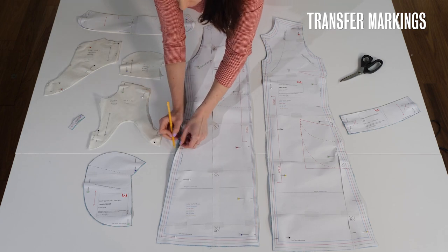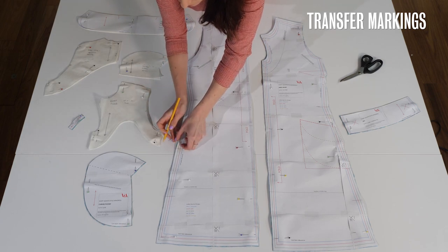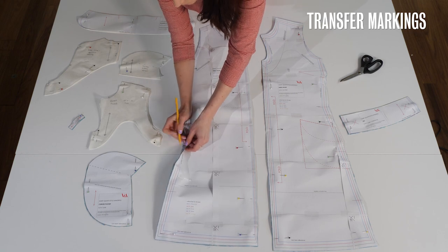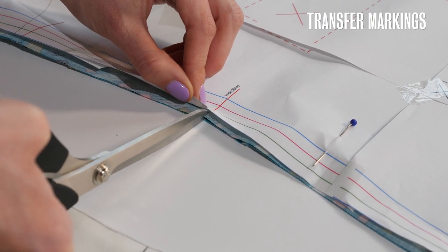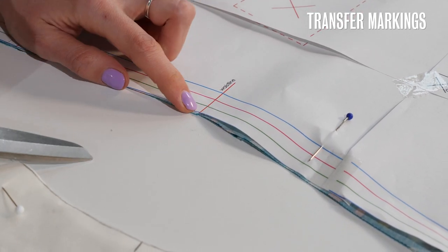So you can mark these either with a pencil making sure that you mark on both sides of the fabric or just as easy is to take your scissors and make a little snip.